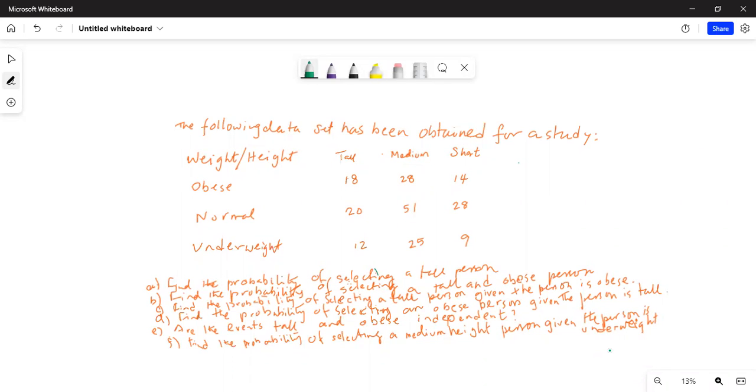The following data set has been obtained for a study. On the first row you have weight and height. Weight is along the rows with three categories: obese, normal, and underweight. And height is along the columns: tall, medium, and short.